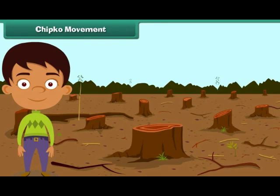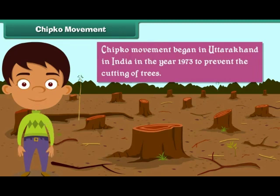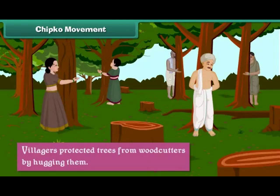The Chipko Movement began in Uttarakhand, India in the year 1973 to prevent the cutting of trees. It was called the Chipko Movement because during the movement, villagers protected trees from woodcutters by hugging them.